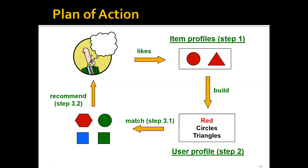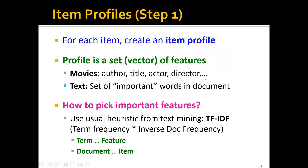So that is the overview of the content-based recommender system approach. Next, we'll go through more details step by step. In the first step, we create an item profile for each item, where the profile is a set of features or a feature vector. For example, in the case of movies, it can be a vector of authors, titles, actors, and directors — specifically, a binary vector where each entry represents one actor, set to one if that actor is in the movie and zero otherwise.